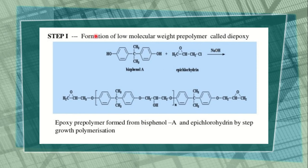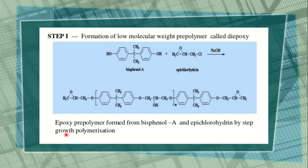The general method of preparation of epoxy resin involves chemical reactions. The first step is the formation of a low molecular weight prepolymer called di-epoxy. Bisphenol A reacts with epichlorohydrin in the presence of NaOH to give the product. The epoxy prepolymer is formed from bisphenol A and epichlorohydrin by step-growth polymerization.